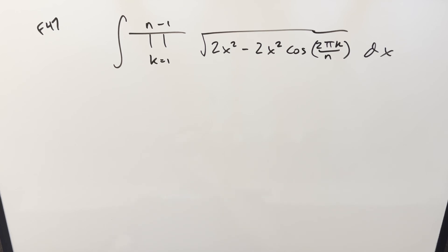Okay, we've got a good one here today. This one's from Caltech Math ME 2025, finals problem 47. We have the integral of the product from k equals 1 to n minus 1 of the square root 2x squared minus 2x squared cosine 2 pi k over n dx.